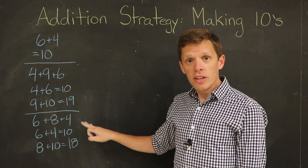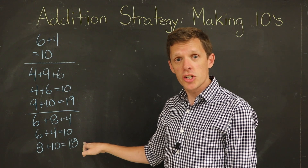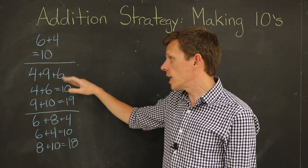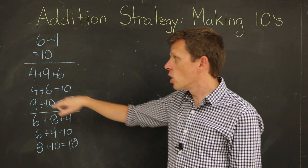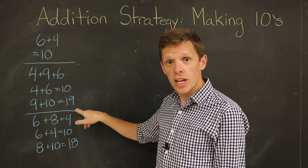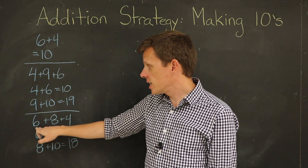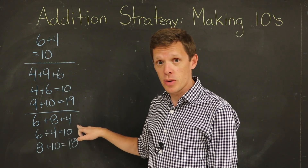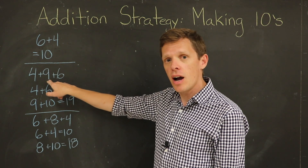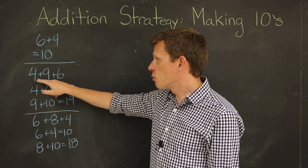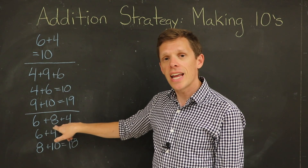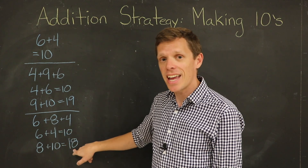That's one way to solve this question. Another way is to look back at the previous question — four plus nine plus six equals nineteen. So if we have six and eight and four, it's going to be one less than when we had the nine. Since four plus nine plus six gave us nineteen, we know six plus eight plus four gives us eighteen.